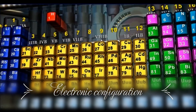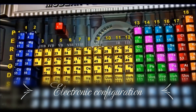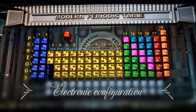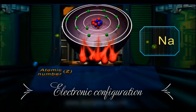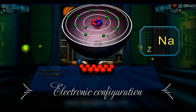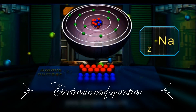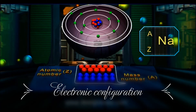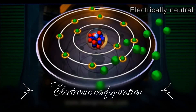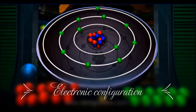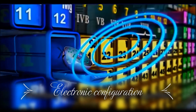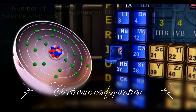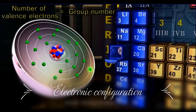Despite these irregularities seen among the elements, it is possible to predict the position of most elements in the periodic table from their configurations, and vice versa. In summary, the number of protons present in the nucleus of an atom denotes its atomic number, while the sum of its protons and neutrons denotes its mass number. The atom is electrically neutral, as it has the same number of electrons as protons. The number of orbits in an atom tells us the period to which that element belongs, while the number of valence electrons decides the group number in the modern periodic table.